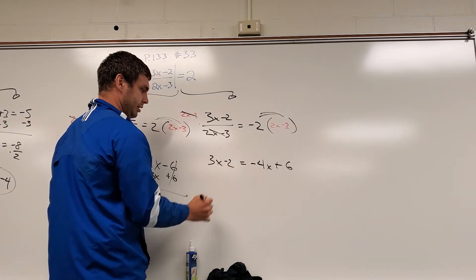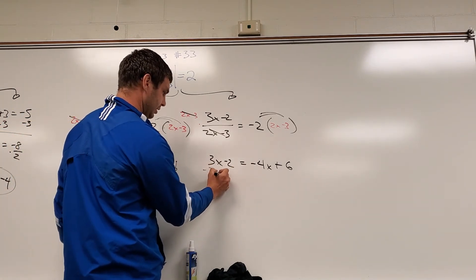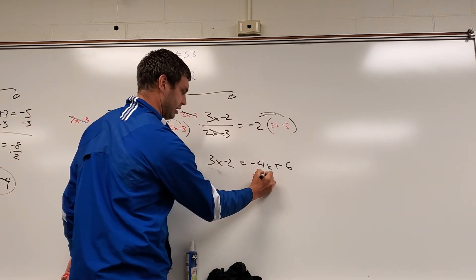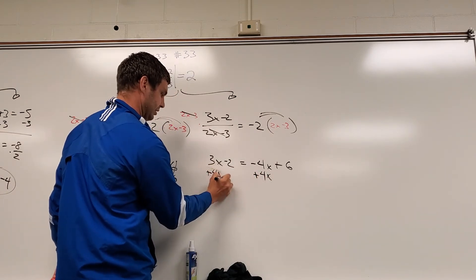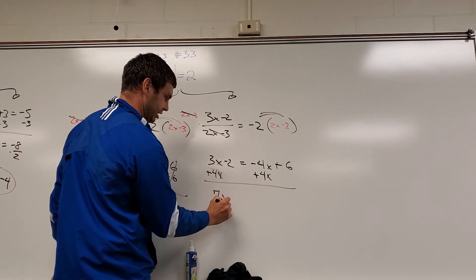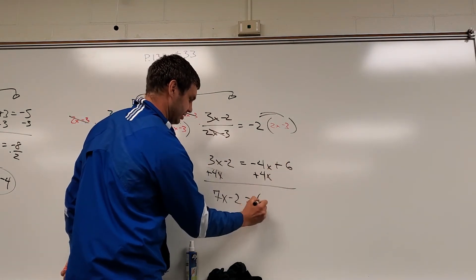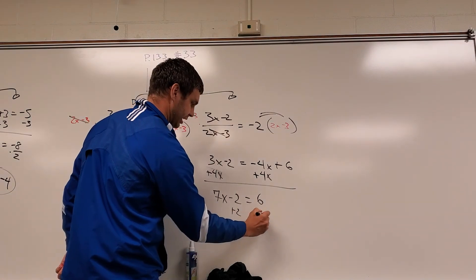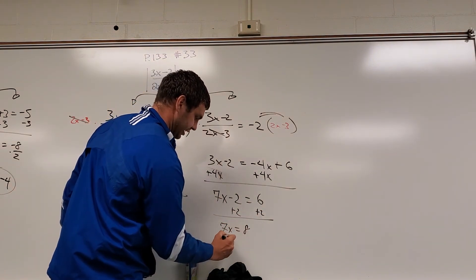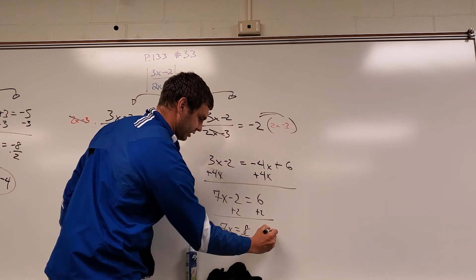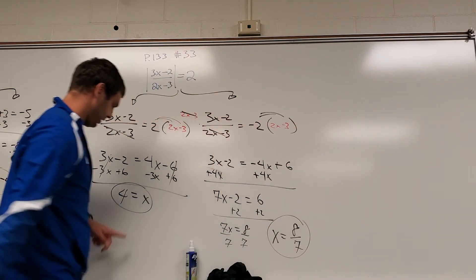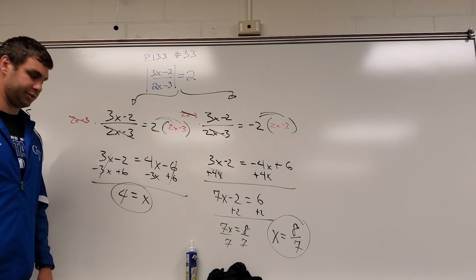For the second equation, adding 4x to both sides gives 7x minus 2 equals 6. Adding 2 gives 7x equals 8, and dividing by 7 gives x equals 8 sevenths. So the two answers are x equals 4 and x equals 8 sevenths.